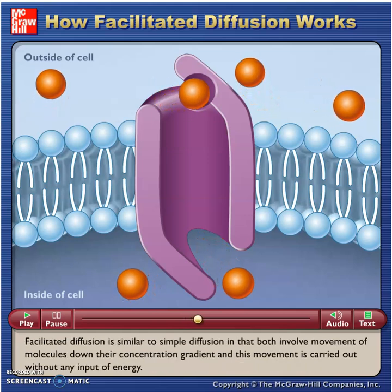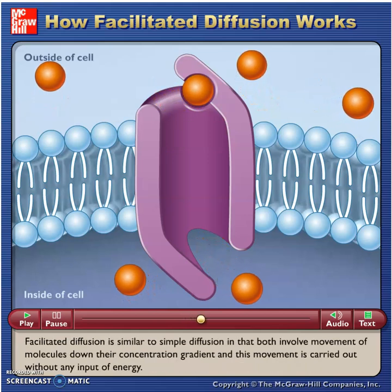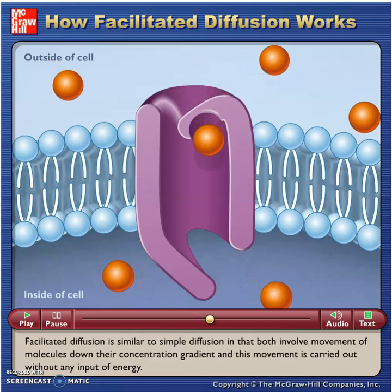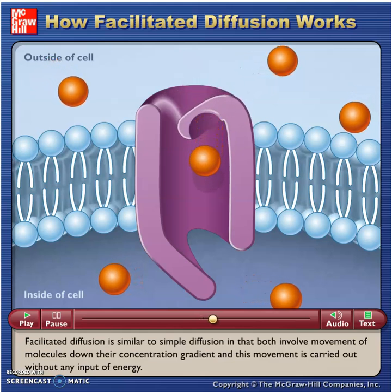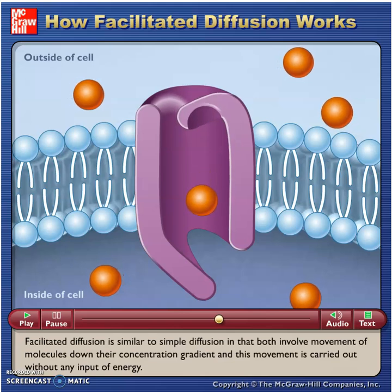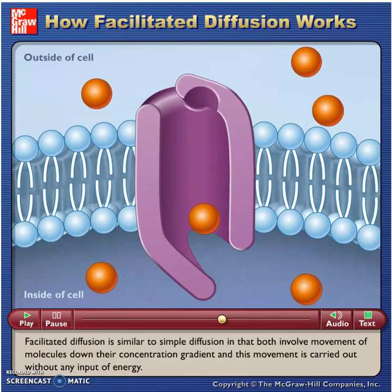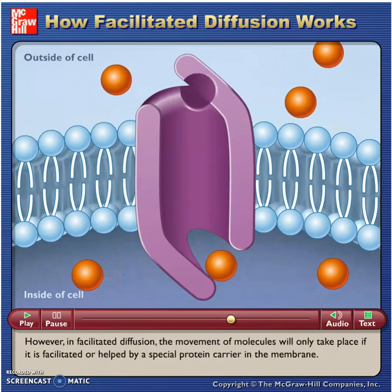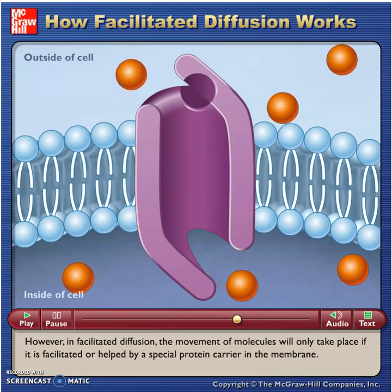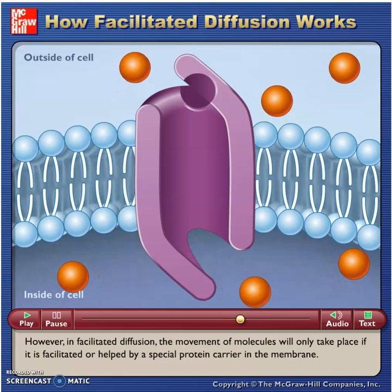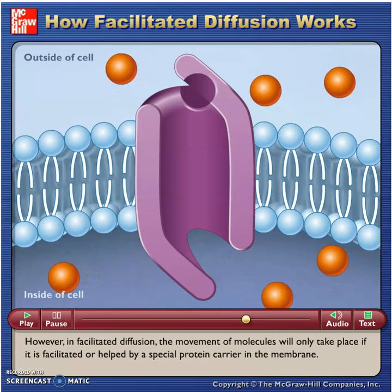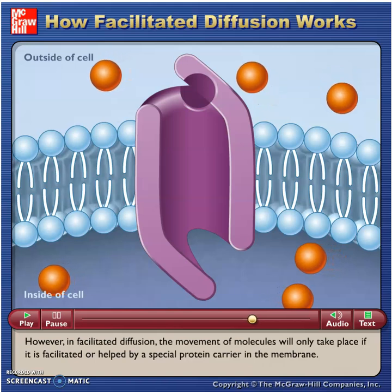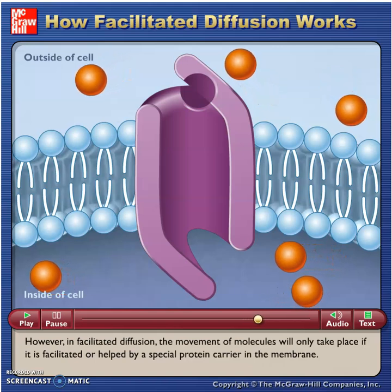Facilitated diffusion is similar to simple diffusion in that both involve movement of molecules down their concentration gradient, and this movement is carried out without any input of energy. However, in facilitated diffusion, the movement of molecules will only take place if it is facilitated or helped by a special protein carrier in the membrane.